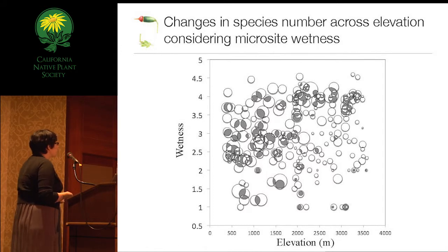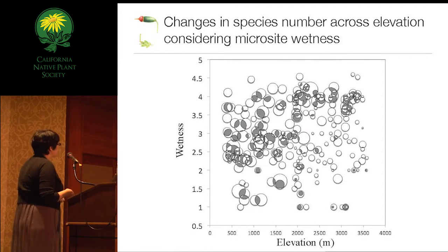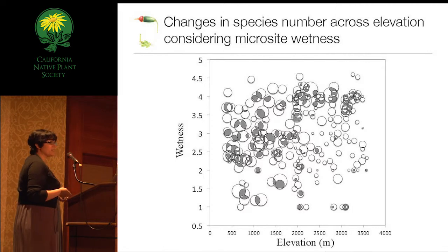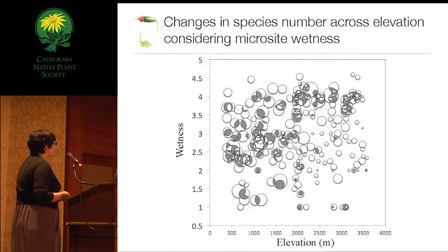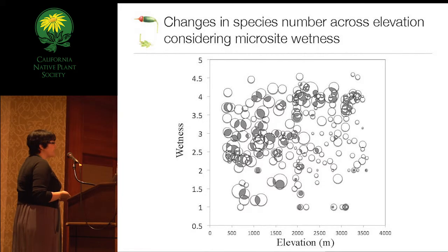How does this make a difference as we increased in elevation? In the wetter microsites, species richness remains fairly consistent across elevation. But as you go into the drier microsites, there's a difference—you get many small bubbles. In the lower elevations they're doing fine, the niches are filled in dry microsites. But as you increase to higher elevations, there are far fewer species in those locations.